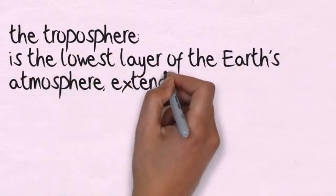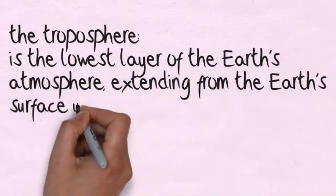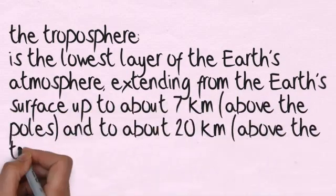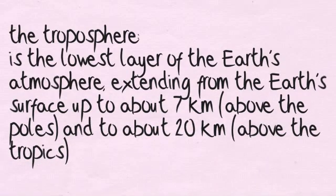The troposphere is the lowest layer of the Earth's atmosphere, extending from the Earth's surface up to about 7km above the poles and up to about 20km above the tropics.